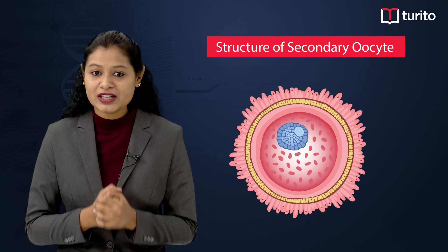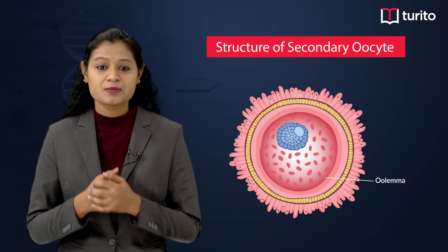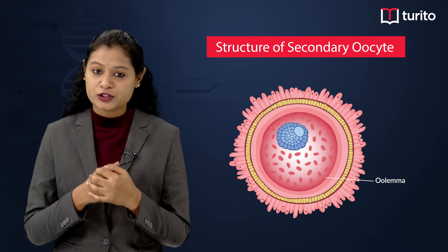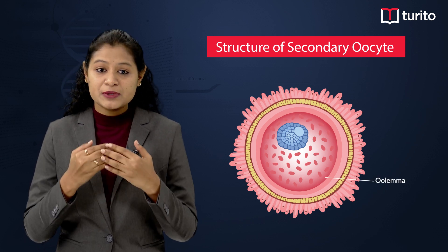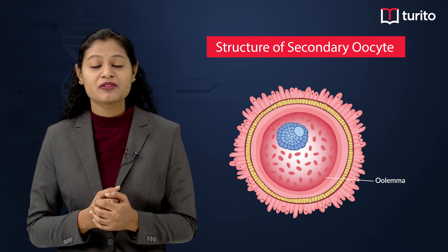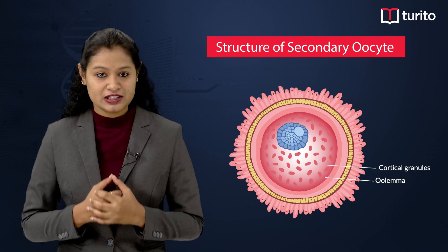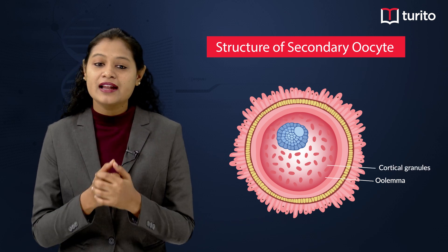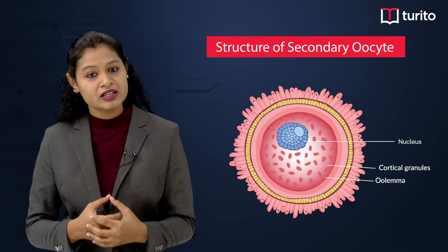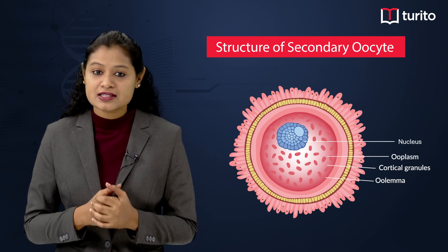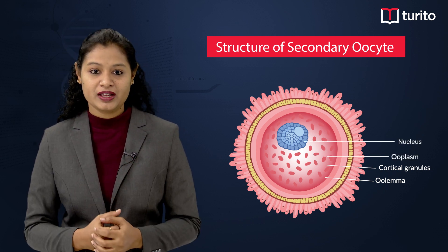Looking at the structure, it is lined by the plasma membrane called the oolemma. Just beneath the oolemma there is presence of cortical granules, and there is presence of the haploid nucleus in the cytoplasm, which is called ooplasm.